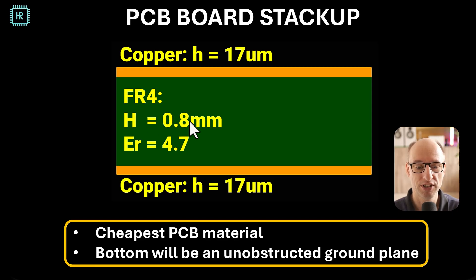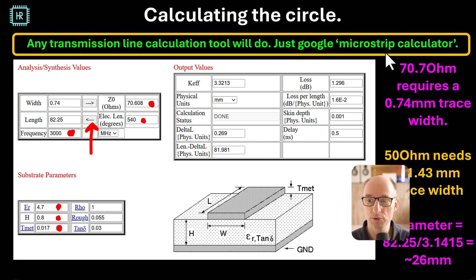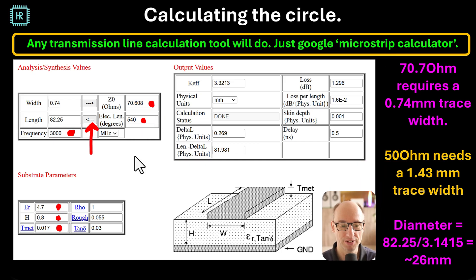So this is the stack-up I'm using. I'm using FR4 with a height of 0.8 millimeters, an epsilon r of 4.7, and standard—I think this is half ounce copper which is 17 micrometers—and I'll be using the cheapest PCB material. The bottom will be an unobstructed ground plane.